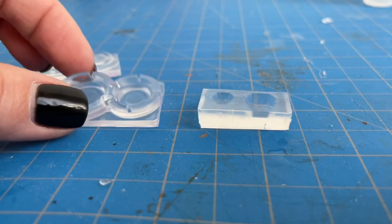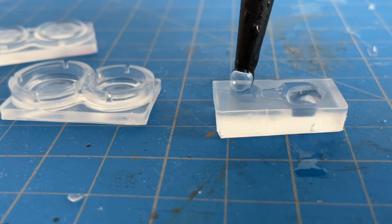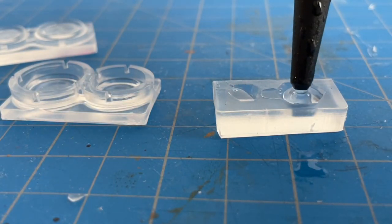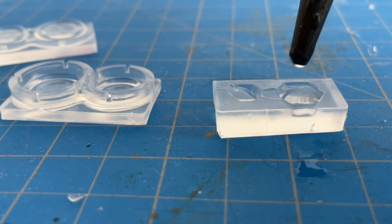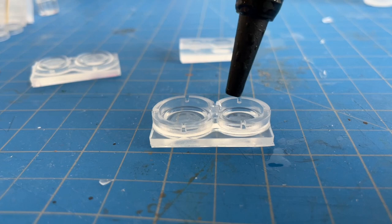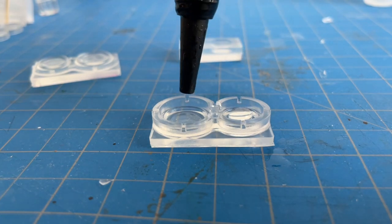While the hexagon jars were curing I decided to start making the bottom and the lids. The bottom of the jar was easy I just poured the resin into the mold and then that was ready to cure.